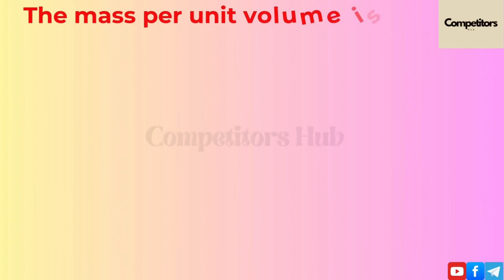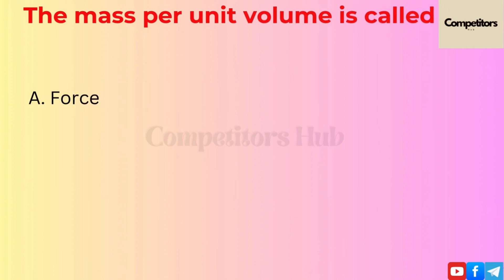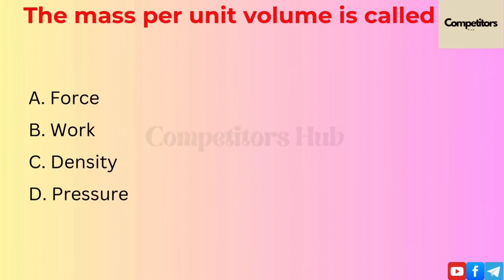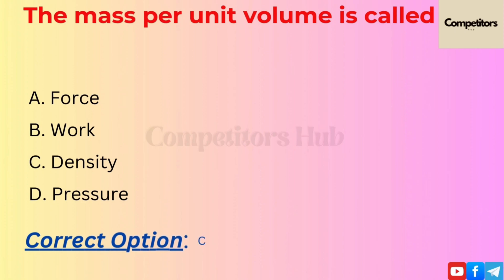The next question is: the mass per unit volume is called? Option A: Force. Option B: Work. Option C: Density. Option D: Pressure. The correct option is C, Density.